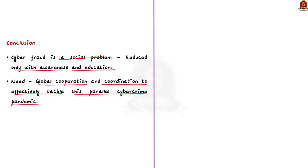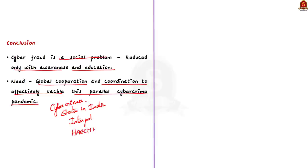Quick recap of the Interpol article: we saw cybercrimes, examples of it, and the status of cybercrime in India. We saw about Interpol as an organization and the operation conducted by Interpol — Operation HE2 — and a novel pilot-tested stop payment mechanism, ARRP: Anti-Money Laundering Rapid Response Protocol. With this, let us wind up this discussion and move on to the next news article.